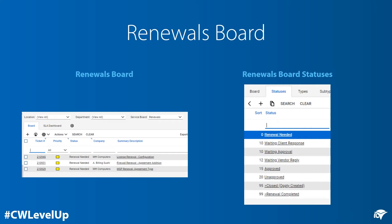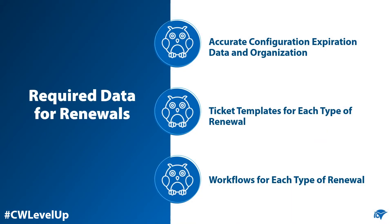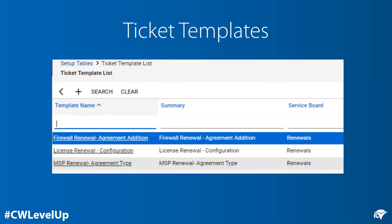The renewals board can be pretty simple. You just want to make sure that it has statuses that are meaningful and that the tickets are all being managed. The required data for renewals includes accurate configuration and expiration data, and the organization of your configuration types — that way it helps you focus on what you are actually renewing. Ticket templates for each of the different types of renewal allow you to set up workflows for each of those renewals. Ticket templates are found in the setup tables; you might be using them for recurring meetings, but they can also be used for generating tickets. Name them based on the type of renewal they're creating on the board.